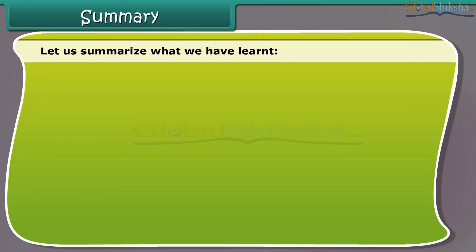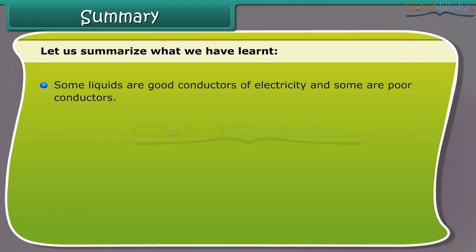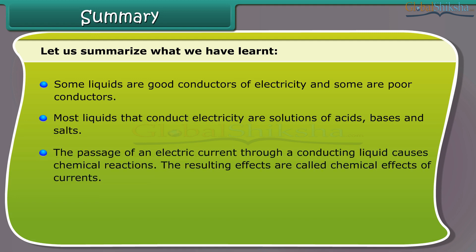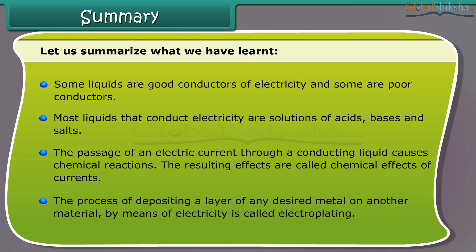Let us summarize what we have learned: Some liquids are good conductors of electricity and some are poor conductors. Most liquids that conduct electricity are solutions of acids, bases, and salts. The passage of an electric current through a conducting liquid causes chemical reactions; the resulting effects are called chemical effects of currents. The process of depositing a layer of any desired metal on another material by means of electricity is called electroplating.